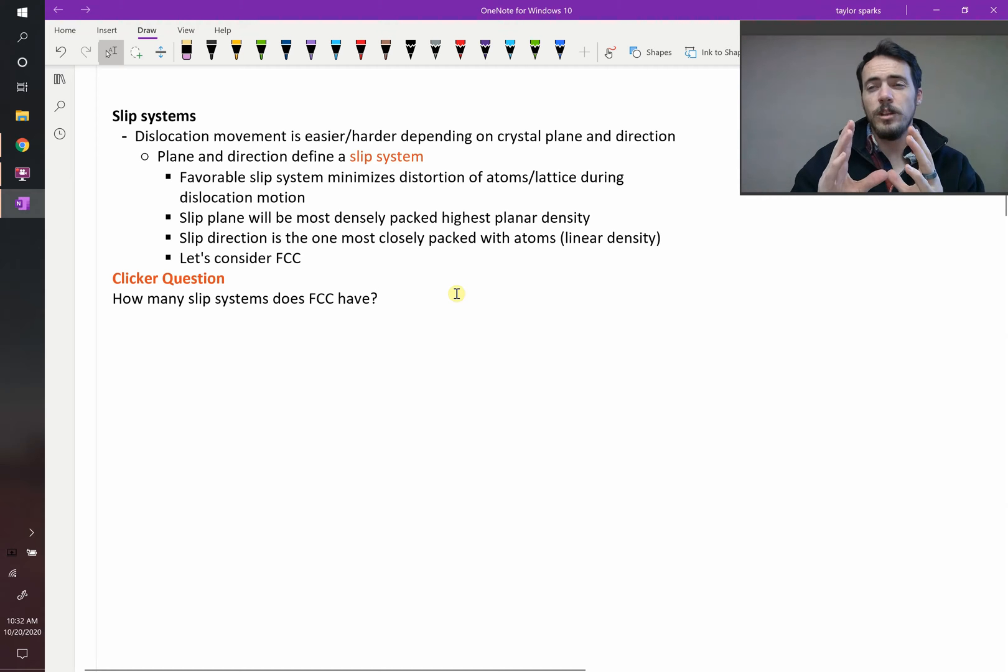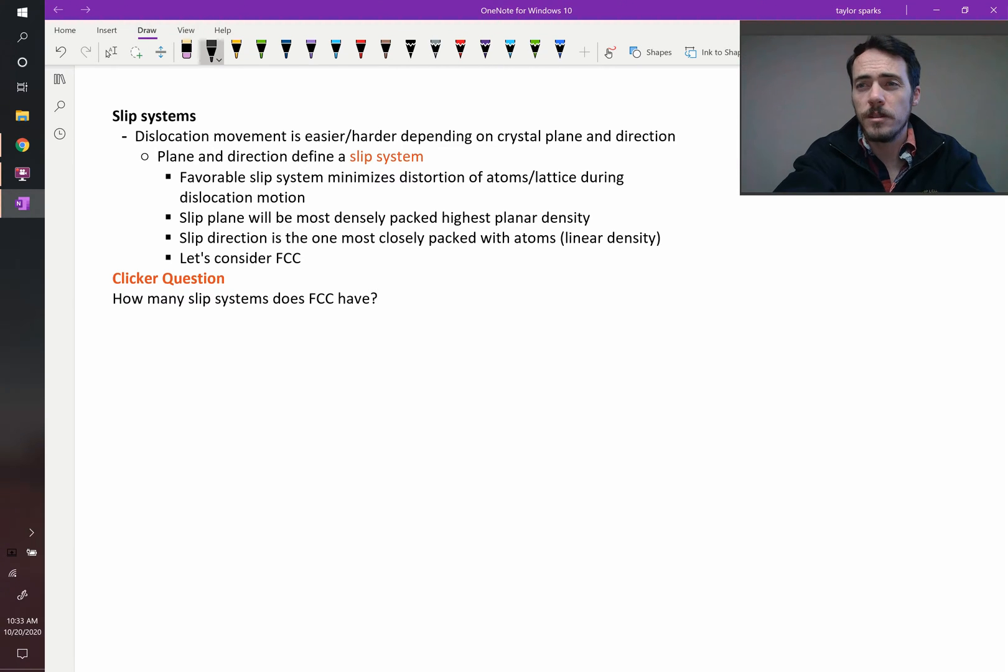If you were to zoom way in to an individual crystal structure, you'd find that not all slip directions are equally as likely. Some are more likely than others. That's because there's something called slip systems that exist in a material, which are your lowest energy ways of getting deformation to occur.